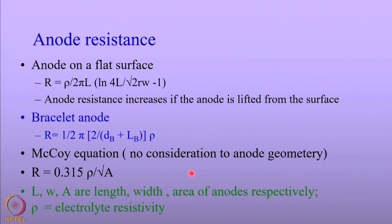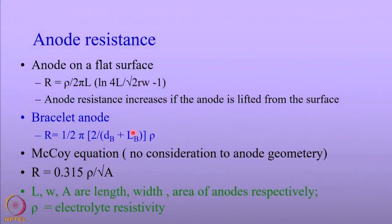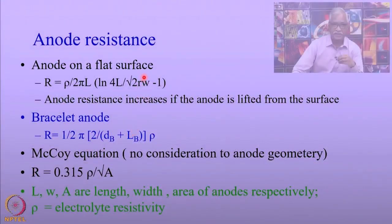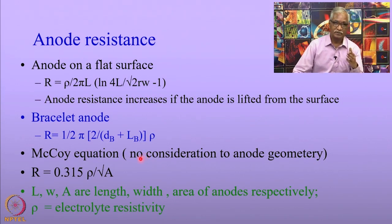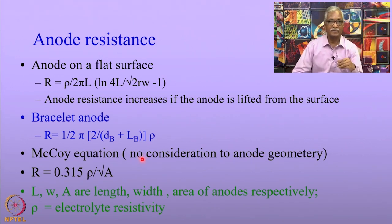When using sacrificial anodes or impressed current anode systems — much the same way as for soils — it is necessary to consider the anode resistance. These formulas are significantly different from those used for calculating resistance of anode beds in soil.